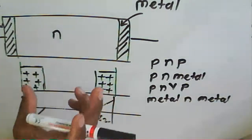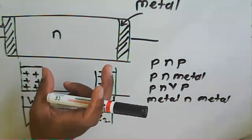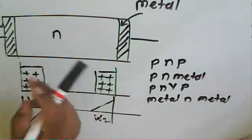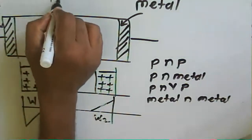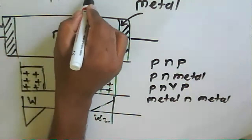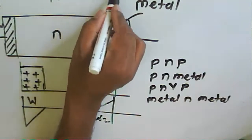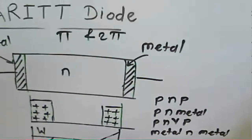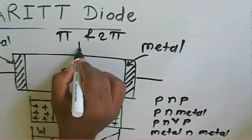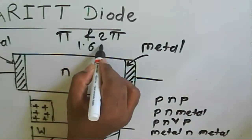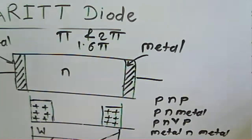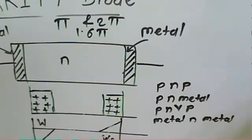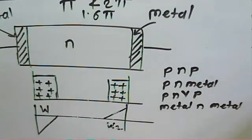The BARITT diode works in the negative resistance region for a given transit angle ranging from π to 2π, with an optimum transit angle of approximately 1.6π.